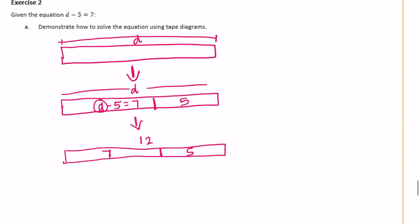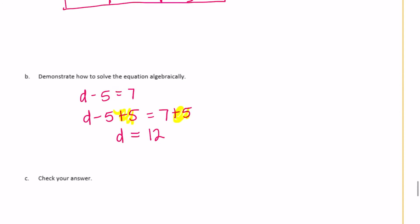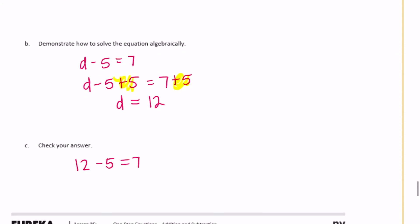Now let's solve this algebraically. d minus 5 equals 7. The goal is to get d alone, so if we have d minus 5, I need to add 5 to get rid of it. So d minus 5 plus 5 equals 7 plus 5 — I've added plus 5 to both sides. So d minus 5 plus 5 is just d, and 7 plus 5 equals 12. Checking: is 12 minus 5 equal to 7? Yes, it is. We could also write 12 minus 5 plus 5 equals 7 plus 5, which is also true.